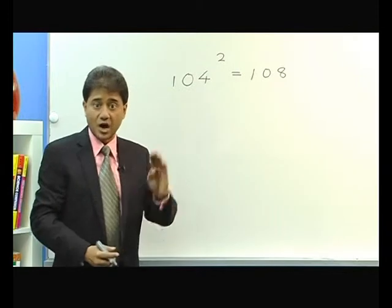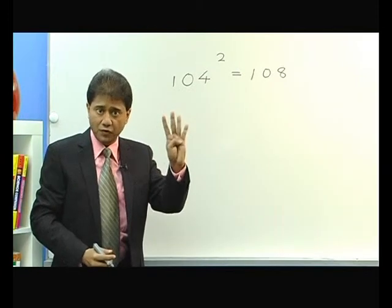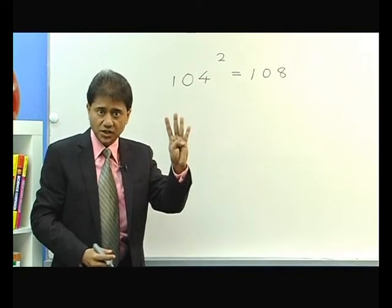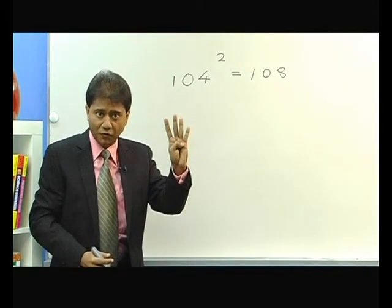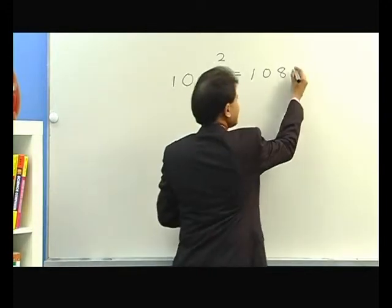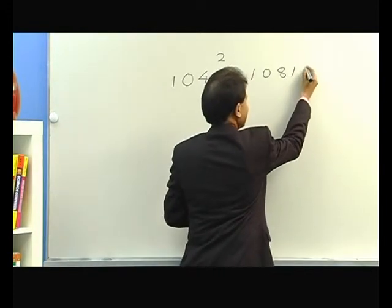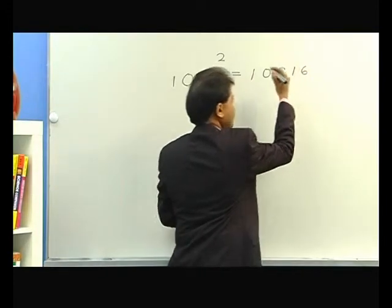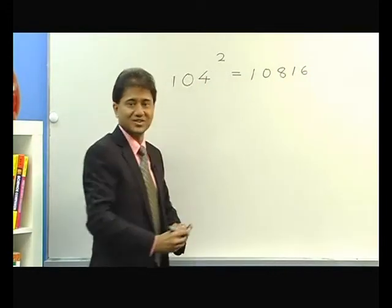And now, square of 4. What is the square of 4? 16. So I just write 16 here and this is your answer.